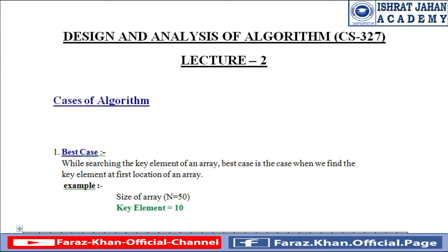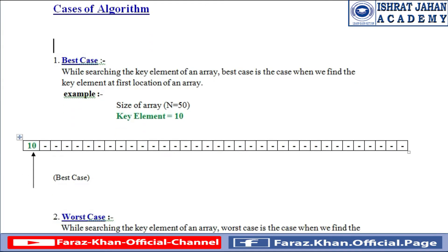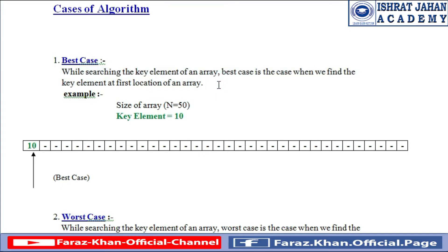In today's lecture we will discuss the cases of algorithm. We have basically four cases of algorithm. Number one is best case. Suppose we have an array of size n equal to 50 and there is a key element which we have to find in that specific array. The best case would be while searching the key element of an array — best case is the case when we find the key element at the first location or first index of the array.